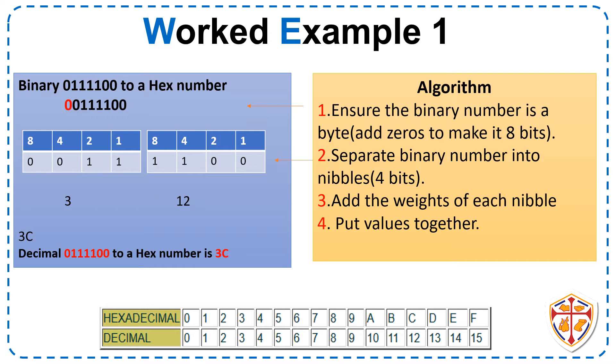Step 2. Separate binary number into nibbles, which is 4 bits. Step 3. Add the weights of each nibble. Nibble 1. 2 plus 1 is 3. Nibble 2. 8 plus 4 gives us 12.